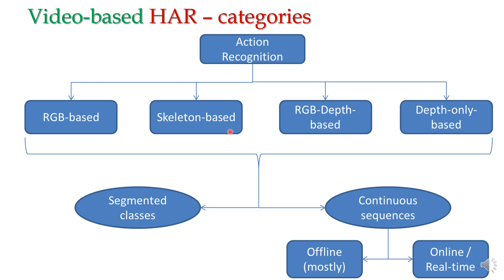Recent advancement includes using large datasets like Kinetics, where skeleton data is extracted from RGB video using OpenPose or similar methods. Compared to RGB, skeleton data is much more compact — instead of full images, you extract around 20 to 25 body joint points such as shoulder, elbow, knee, and waist, represented as simple numbers. This gives a much smaller data volume than RGB. Depth-map-only action recognition and gesture recognition methods also exist.